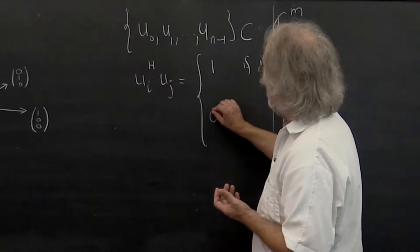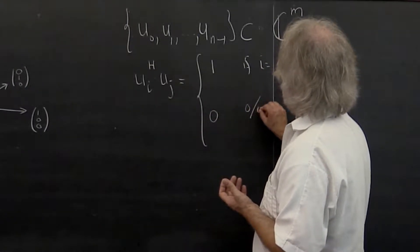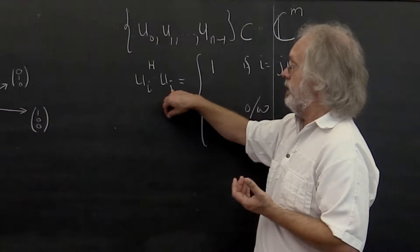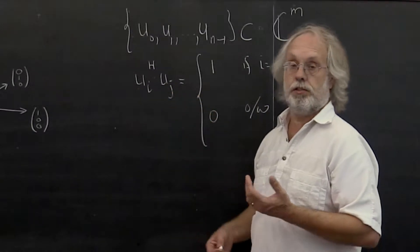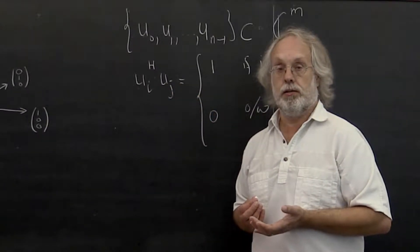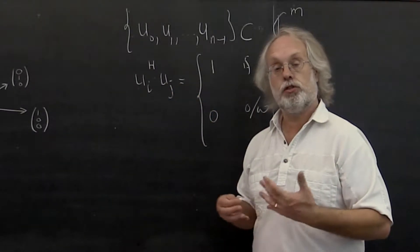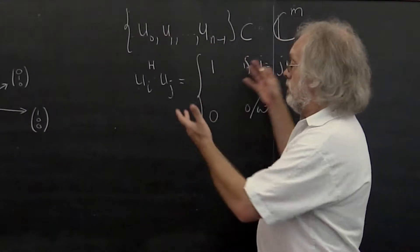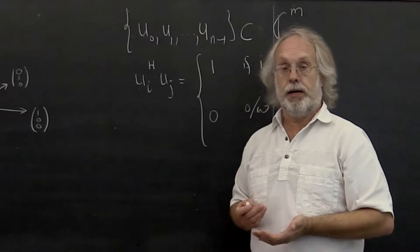Or it evaluates to 0. Otherwise, why? Because if i is not equal to j, then we want those two vectors to be orthogonal to each other. So the formal definition is given in the notes. Conceptually, this is what's going on.